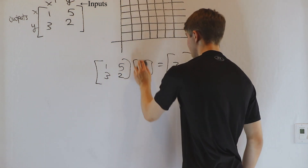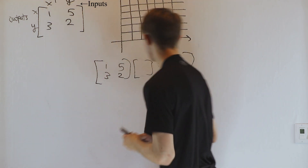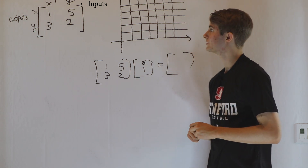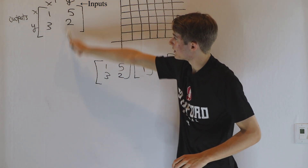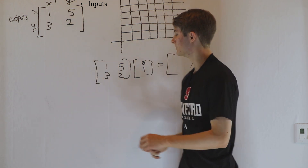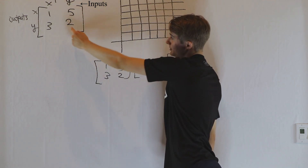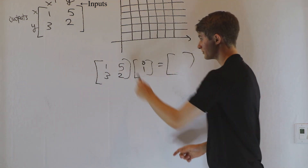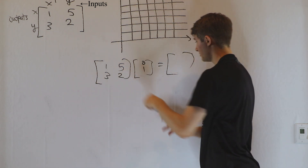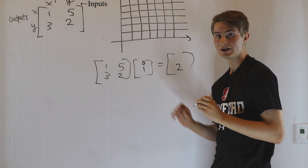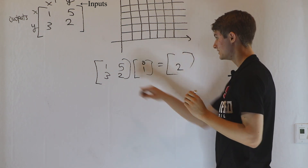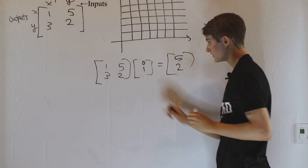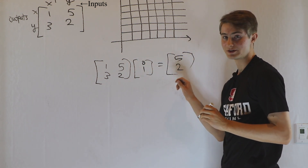If we want to look at a different vector — say this time we're looking at [0, 1] — so this time we're only getting one y input. When we look at the matrix, we're going to look at our y inputs, which are the second column. The y output for every y input is two. So if we multiply this matrix by [0, 1], the y output is going to be two, so the y value of this vector is going to be two. The x value is going to be the x output, which is five.